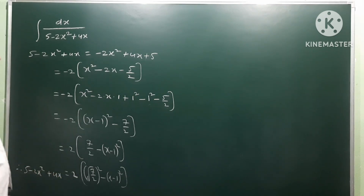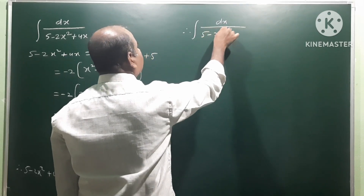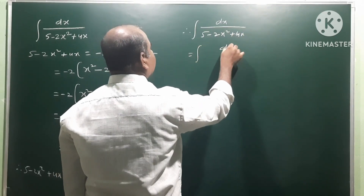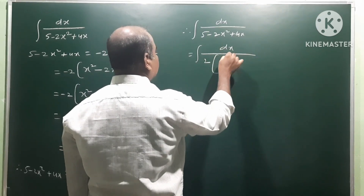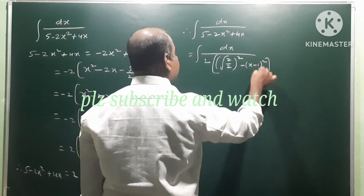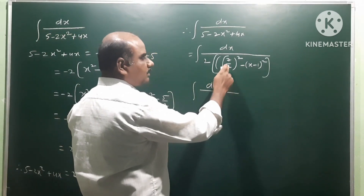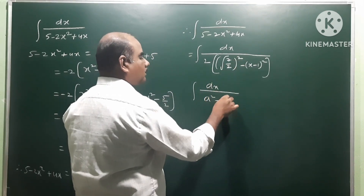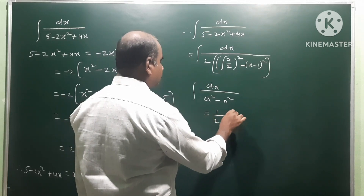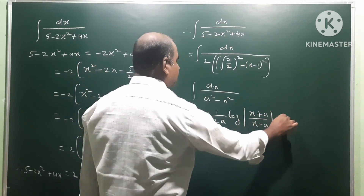So the integral dx by (5 - 2x² + 4x) equals integral dx by [(√(7/2))² - (x-1)²]. This matches the standard formula: integral dx by (a² - x²) = 1/(2a) · log|( (x+a)/(x-a) )| + C. That is the formula to apply here.